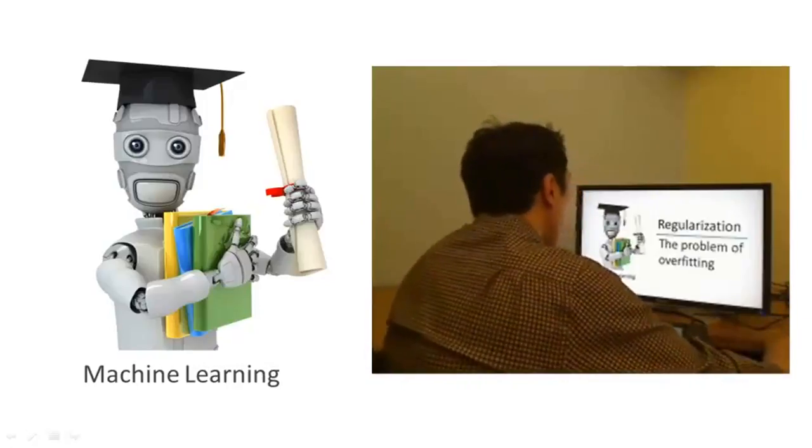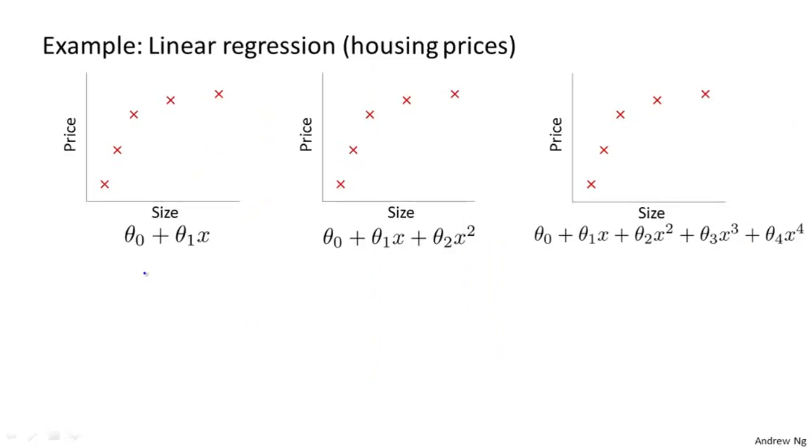So, what is overfitting? Let's keep using our running example of predicting housing prices with linear regression, where we want to predict the price as a function of the size of the house. One thing we could do is fit a linear function to this data, and if we do that, maybe we get that sort of straight line fit to the data. But this isn't a very good model. Looking at the data, it seems pretty clear that as the size of the house increases, the housing prices plateau or kind of flatten out as we move to the right. And so, this algorithm doesn't fit the training set very well, and we call this problem underfitting.